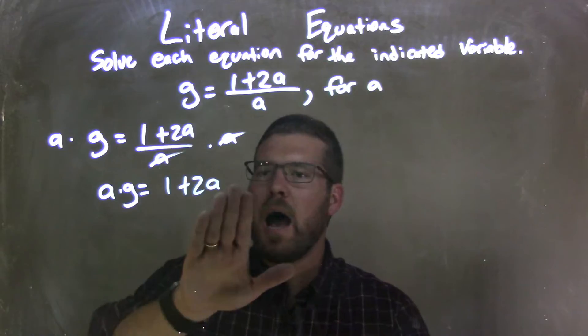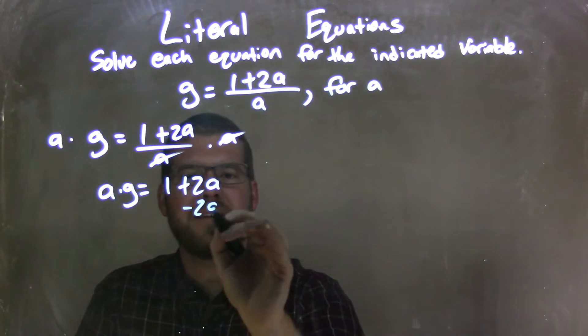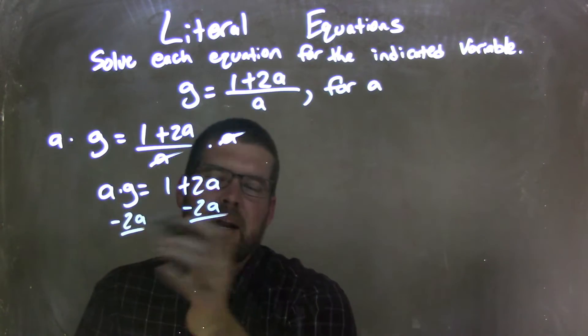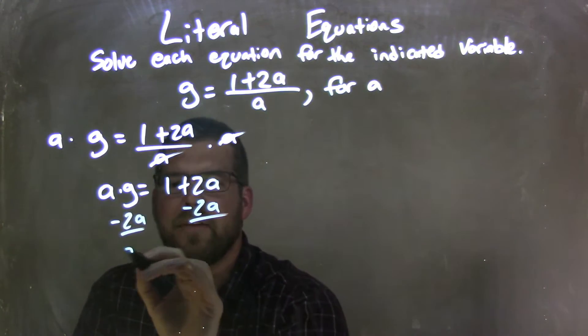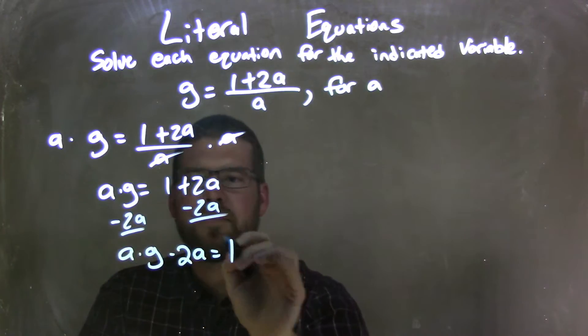So from there, I'm going to bring my a's over to one side and my numbers to the right, so I'm going to subtract the 2a to both sides, and we don't have any numbers to bring over to the right. So now I have a times g minus 2a equals 1.